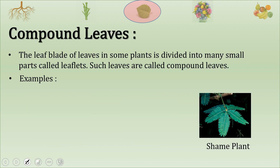Now let us see compound leaves. The leaf blade in some plants is divided into many small parts called leaflets. Such leaves are called compound leaves. An example is the shame plant, also called mimosa or touch-me-not. The small, small parts are called leaflets, and these are called compound leaves.